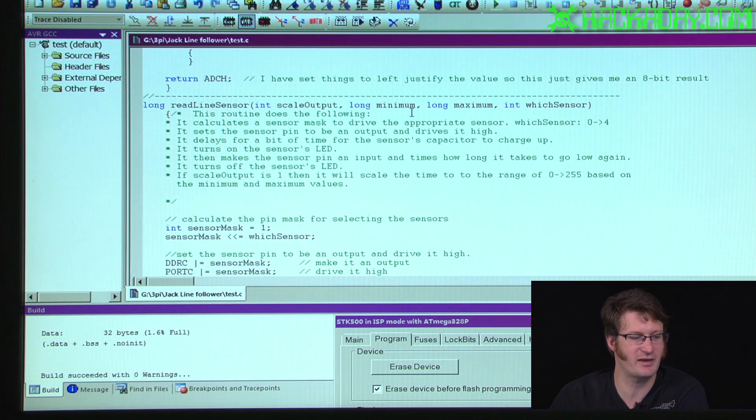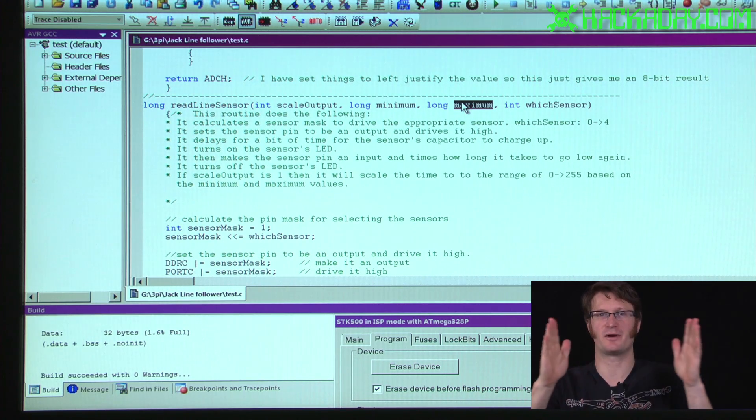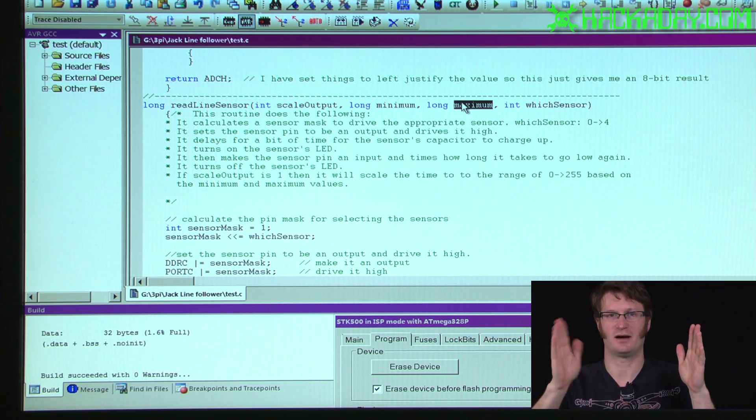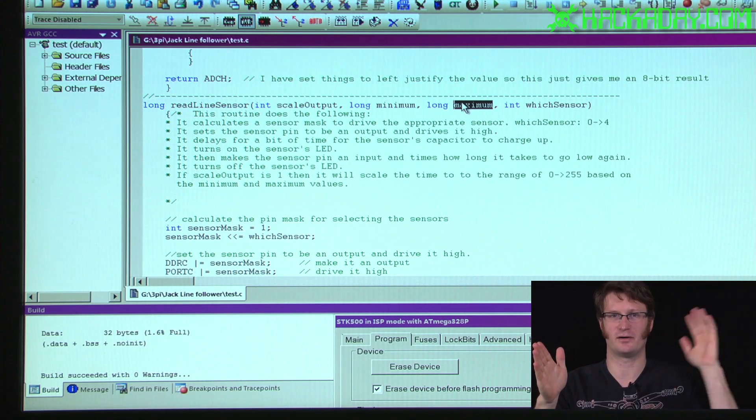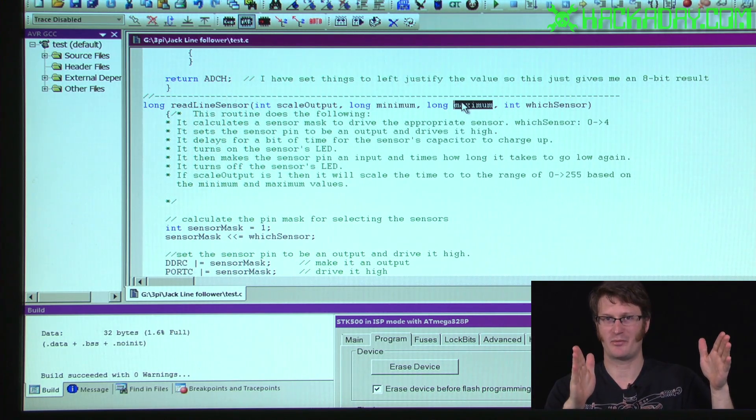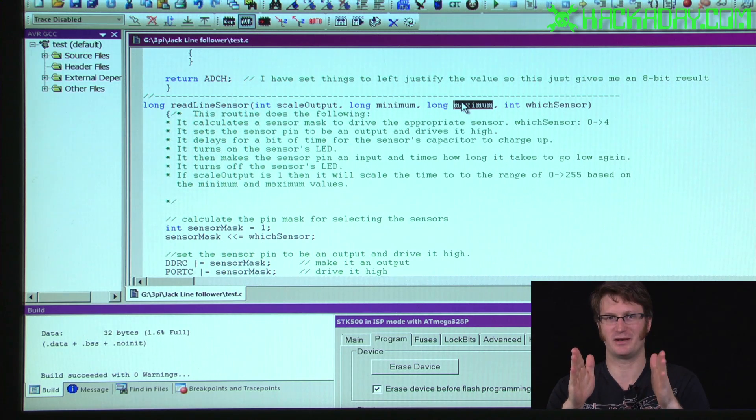If you are scaling it, we've got minimum and maximum. And what these represent are the minimum value. Pretty much if you've got a range of numbers, maybe this is zero and this is 65,000. If I set my minimum to be here and my maximum to be here, then if we set scaling to be on, this will become zero and this will become 255.